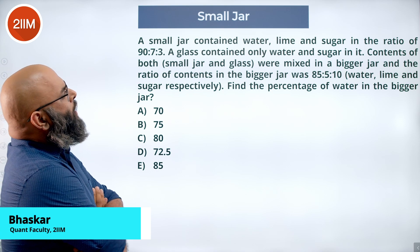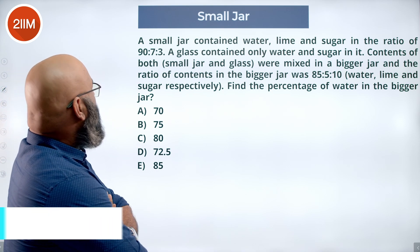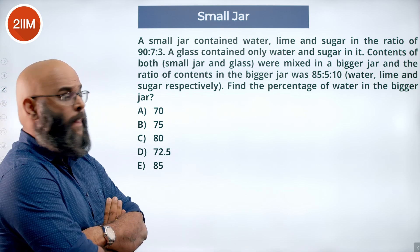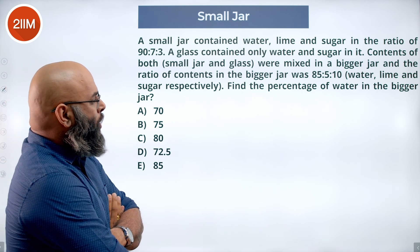A small jar contained water, lime, and sugar in the ratio of 90:7:3. A glass contained only water and sugar.